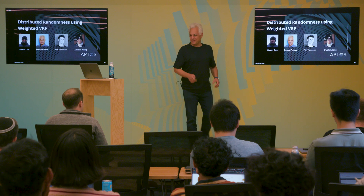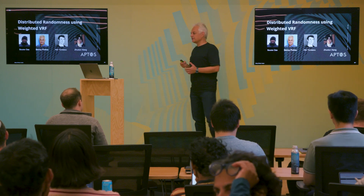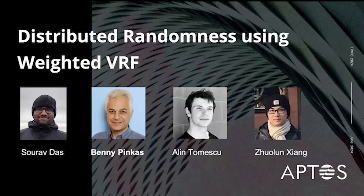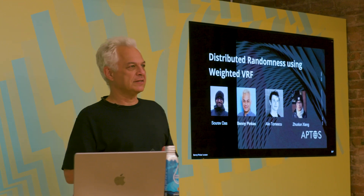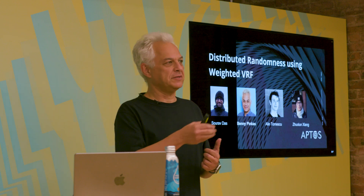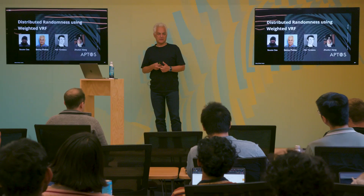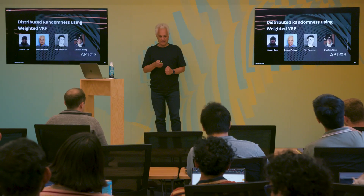Today Benny is going to tell us about a very exciting protocol that Aptos has developed, fully designed and brought into production in Aptos Labs. He'll be talking about randomness using Graded VRF - a protocol designed and implemented at Aptos Labs that you can actually use on the Aptos blockchain today. This is joint work with Sourav Das, who is here, and with Alin Tomescu and Daniel Xiang from Aptos Labs.